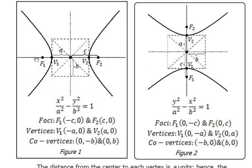In Figure 1, the transverse axis is the x-axis and the center is at the origin. The center, the vertices, and the foci are collinear with each other on the x-axis. So the standard equation is x-squared over a-squared minus y-squared over b-squared equals 1. For the standard equation of a hyperbola in which the transverse axis is the y-axis, we have the form shown here.